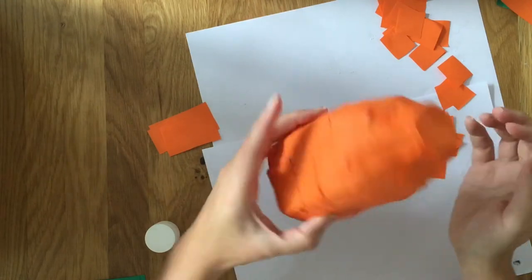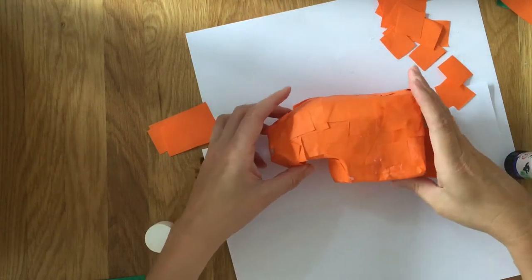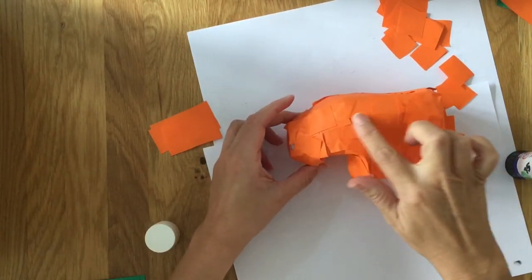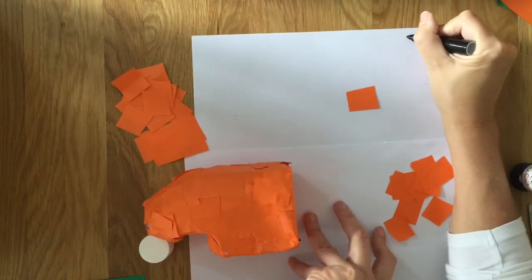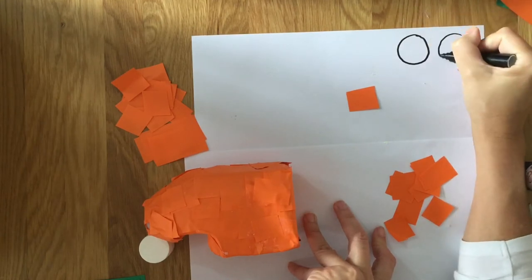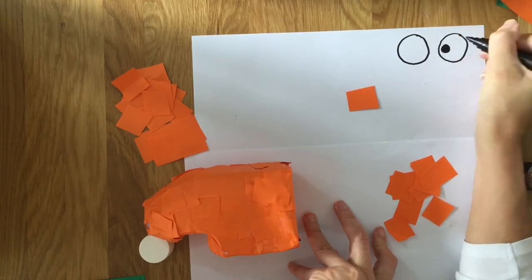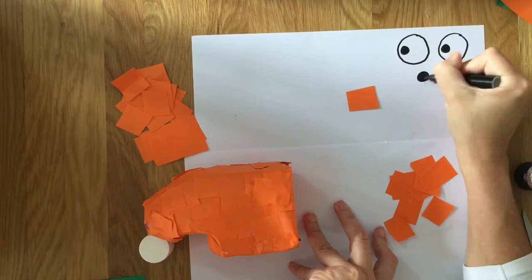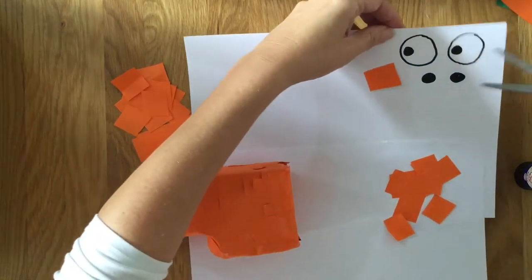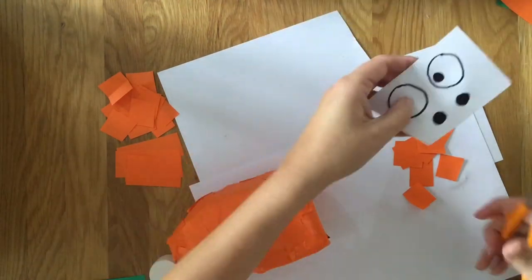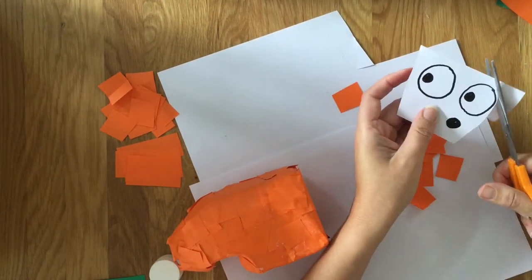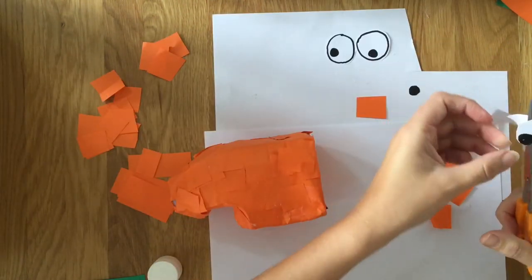So now we've got all our container covered. This part's going to be his head and this is going to be Fergal's body. So now we need to start drawing out some eyes, and Fergal will need a couple of nostrils as well. Once we've got those cut out, then we can glue them onto Fergal's body.